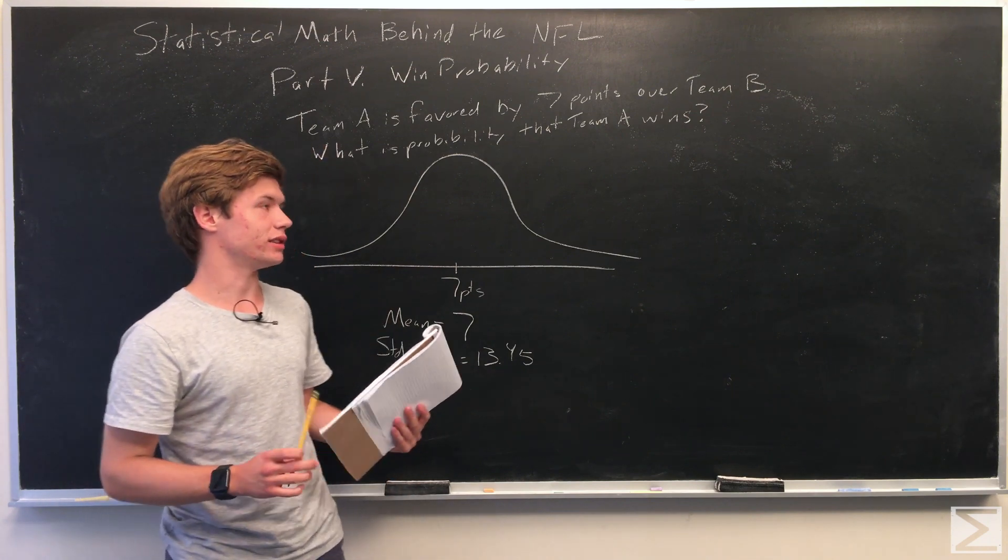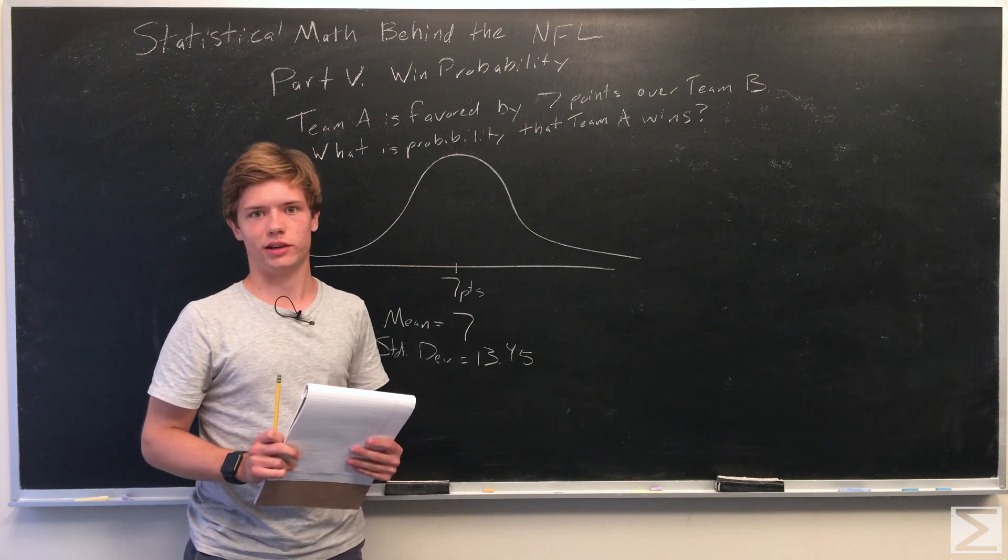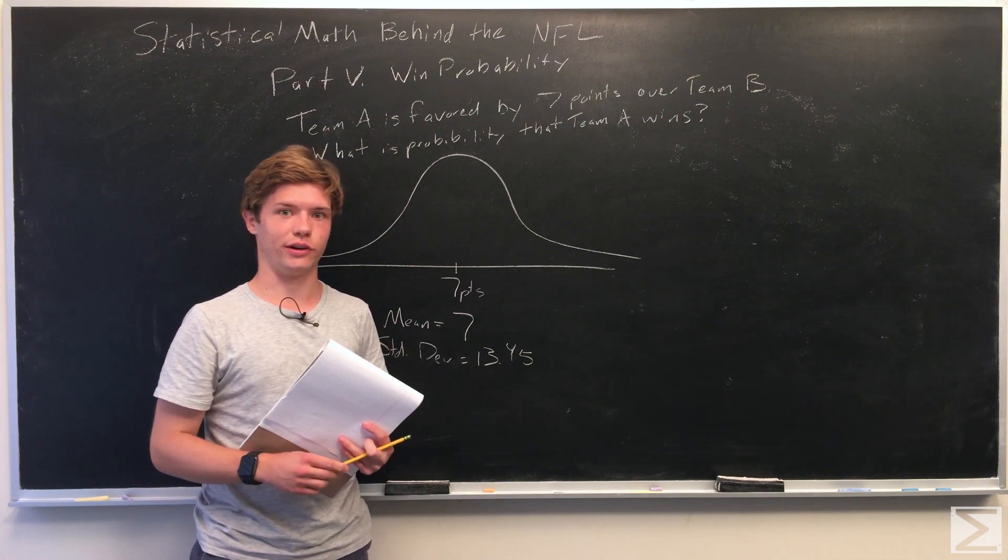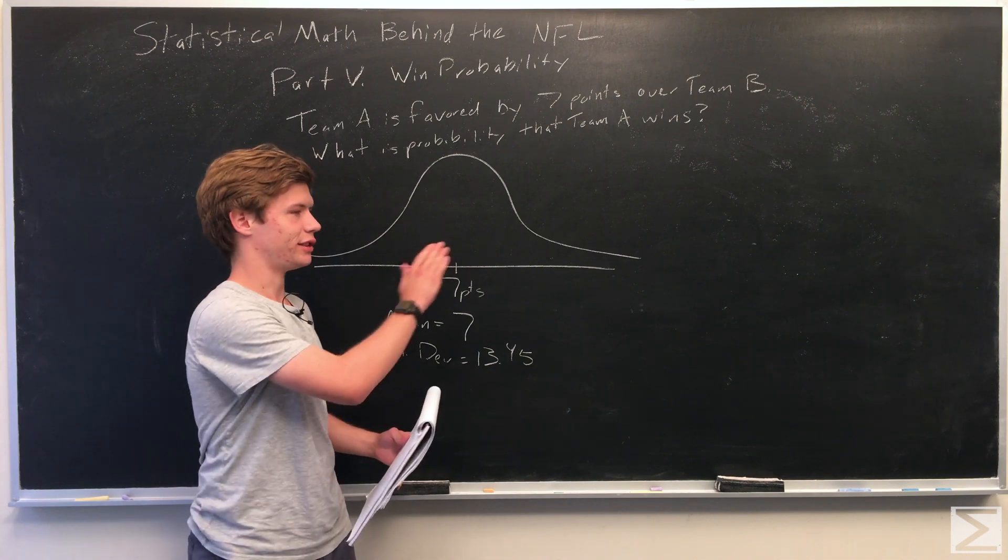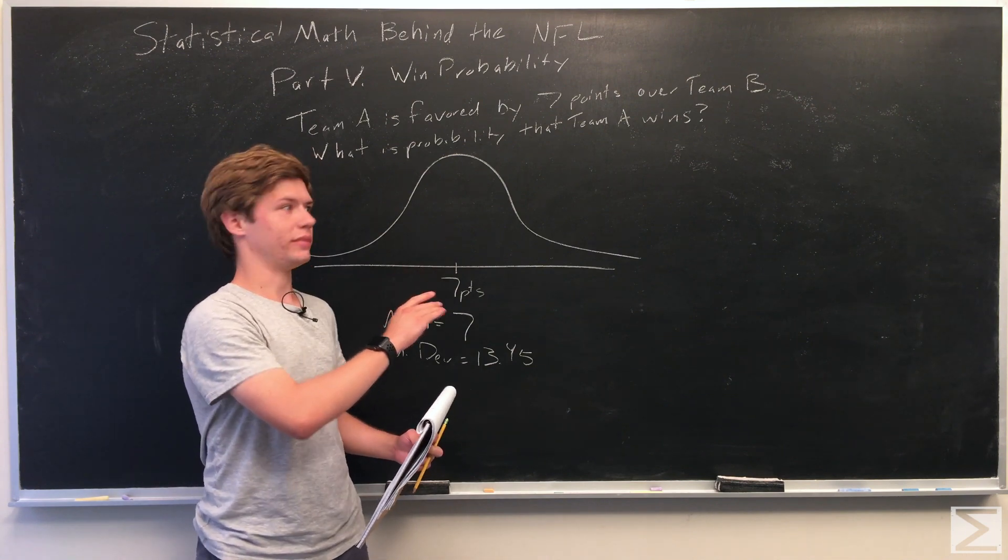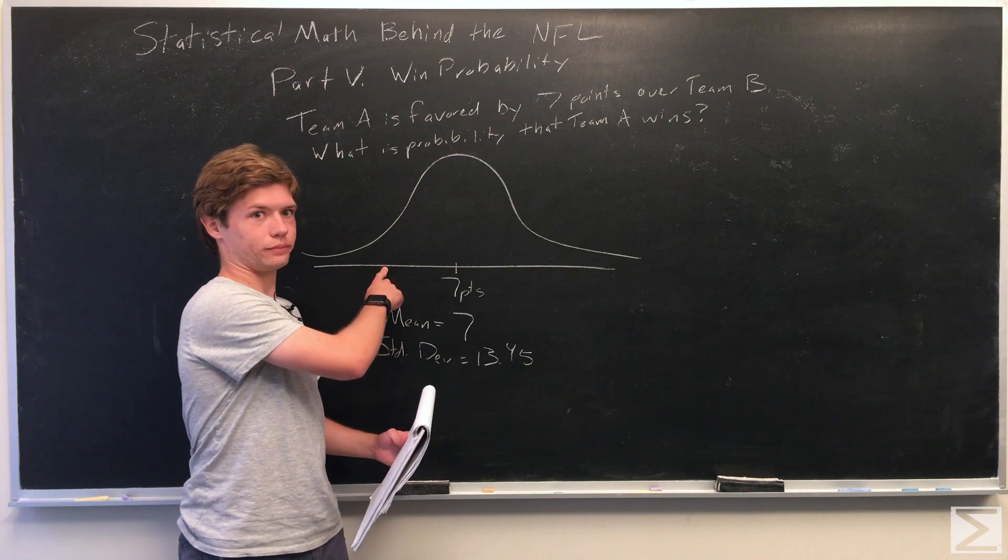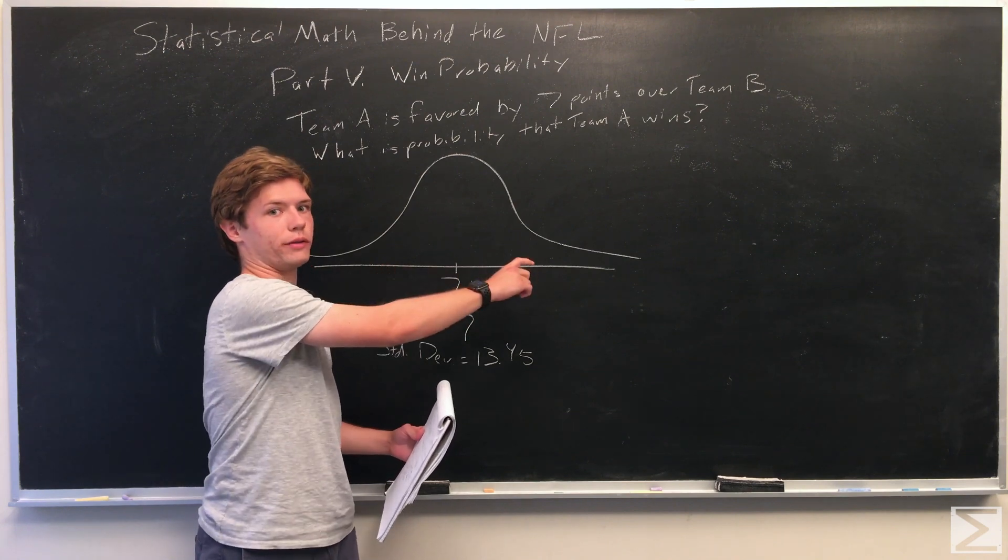So if Team A scores at least one more point than Team B, Team A wins. So the first thing you have to do is figure out the area of this curve that is on this side of 0.5 points.